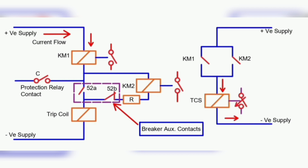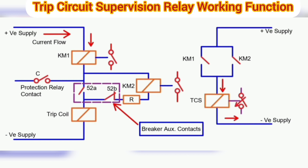The trip circuit supervision relay has three coils: KM1, KM2, and TCS. To limit the current through KM1 and KM2 relay coils, resistance R is added. The relay monitors the healthiness of the trip circuit in both closed and open breaker conditions. The trip circuit supervision function is divided into two categories: 1. Pre-close trip circuit supervision, and 2. Post-close circuit supervision.